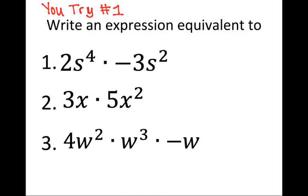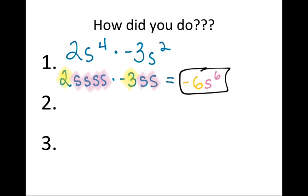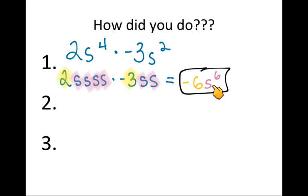Try these three in your journal. For the first: 2s to the 4th times negative 3s squared. Expanding: 2 × (−3) = −6, and there are 6 total s's, so the answer is negative 6s to the 6th power.